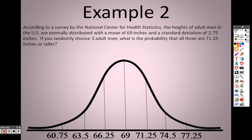It says, if you randomly chose three adult men, what's the probability that all three are 71.25 inches or taller? 71.25 or taller means I want this percent in here, this percent in here, this percent in here. So I add all those up to get 16%.